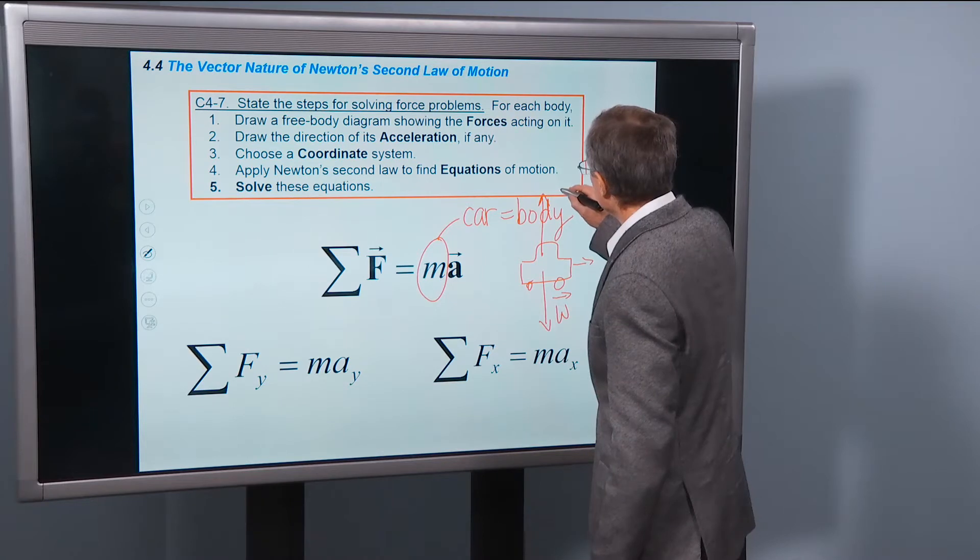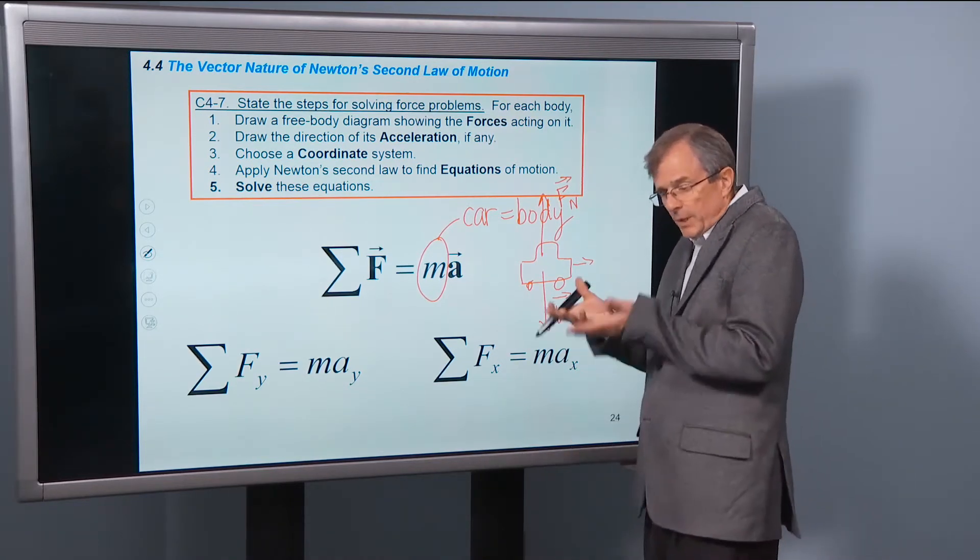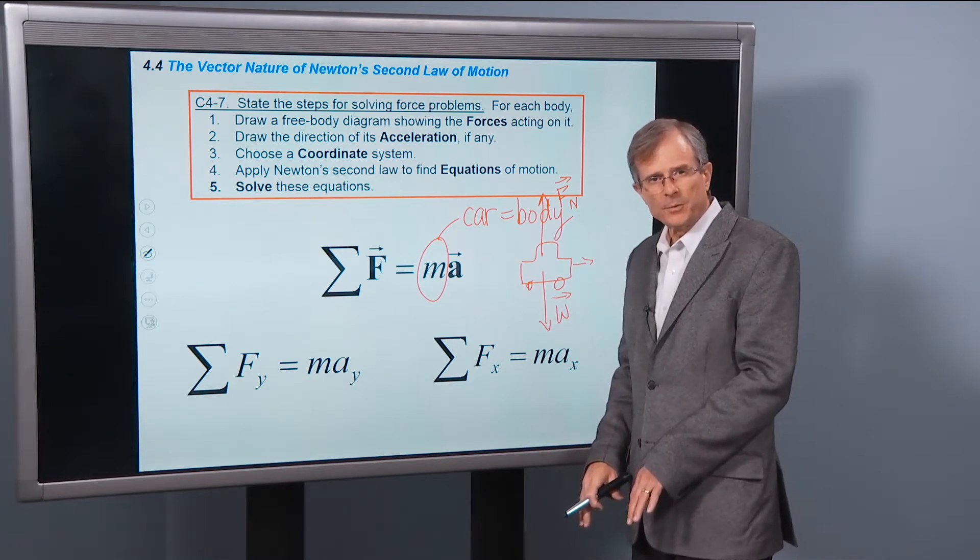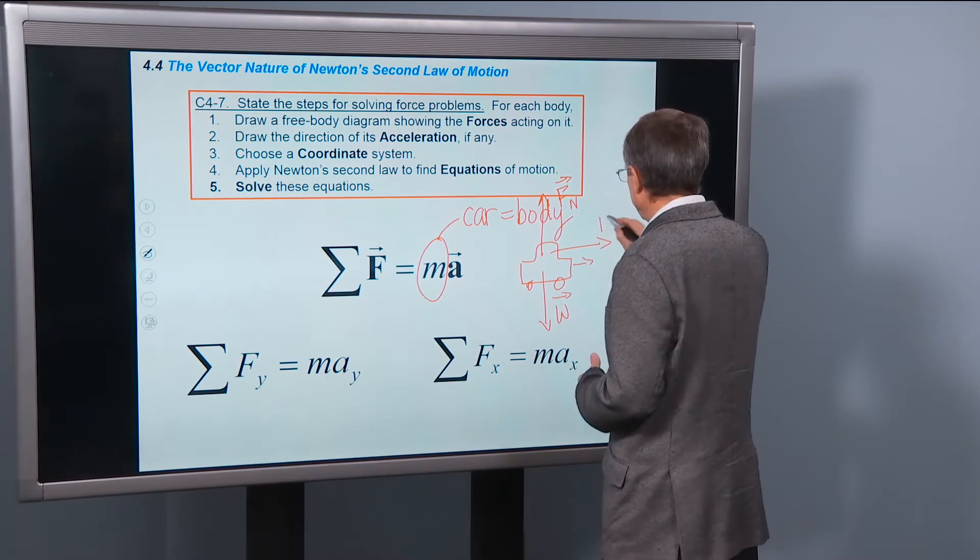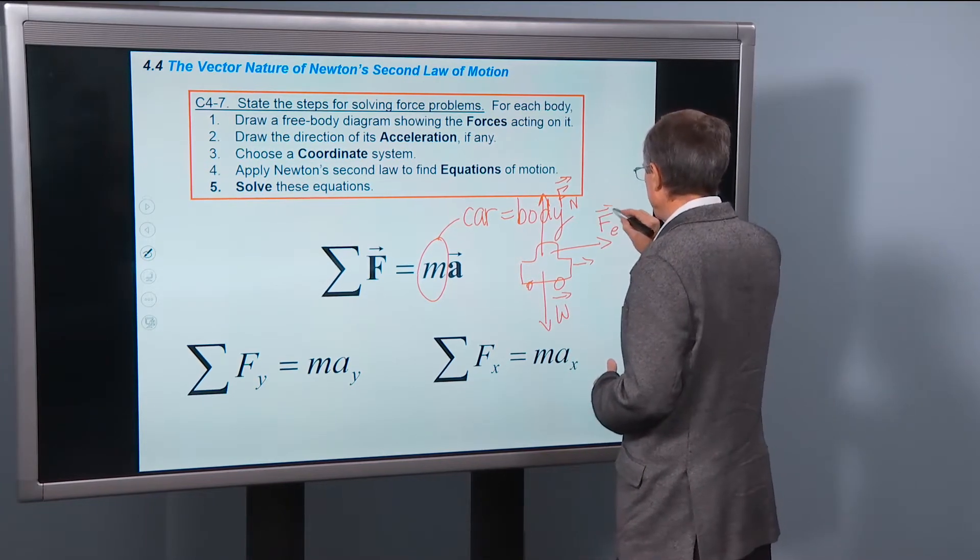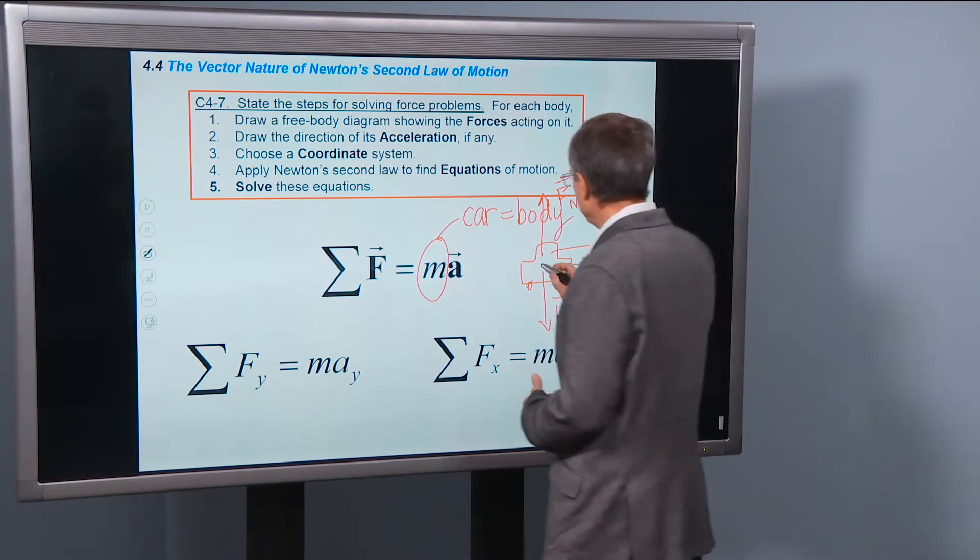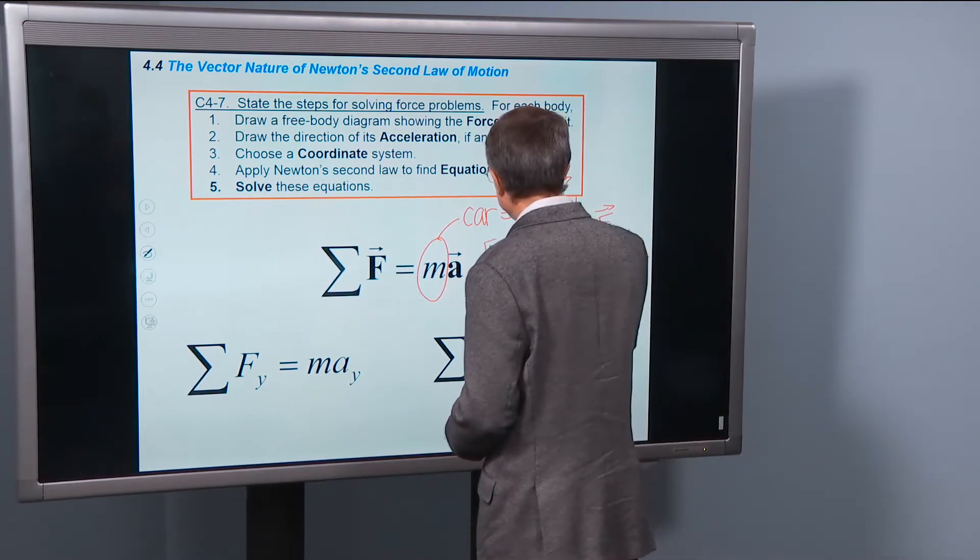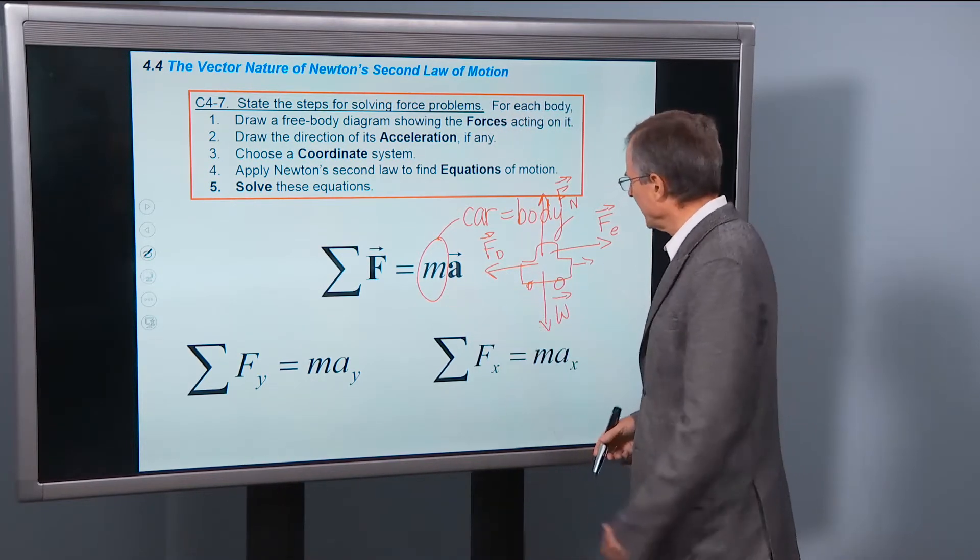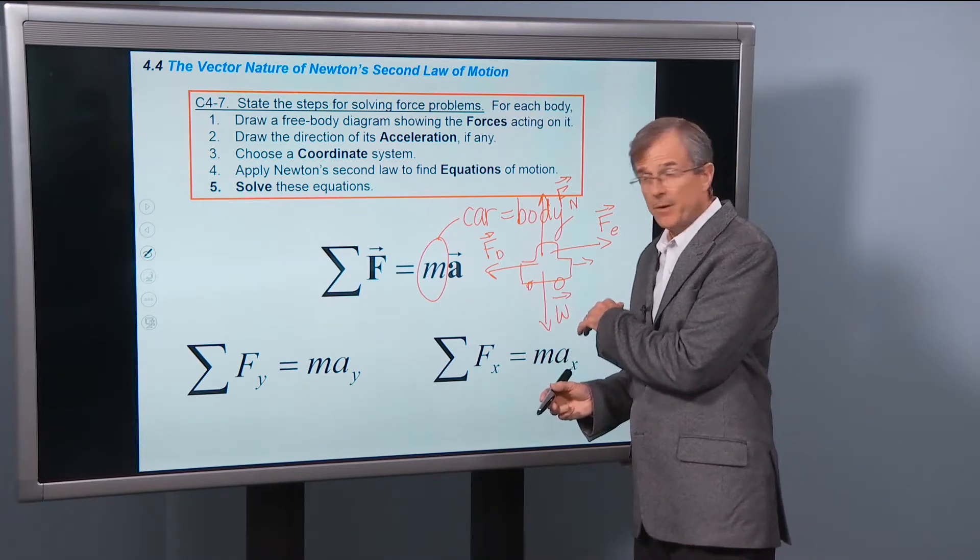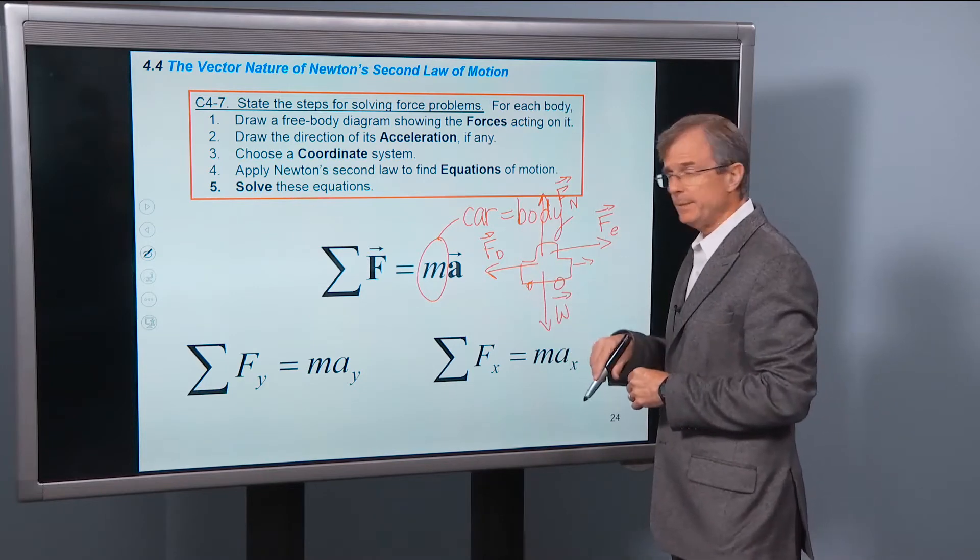What's known as the normal force. We'll talk more about this later, too. It's holding the car up, stopping it from falling through the road. There's the forward force of the engine. Let's just call it F sub E for the force of the engine pushing the car forward. And then there's a drag force. Let's just call it F sub D. The drag force that's trying to slow it down. That is a free body diagram showing all the forces acting on this particular body.